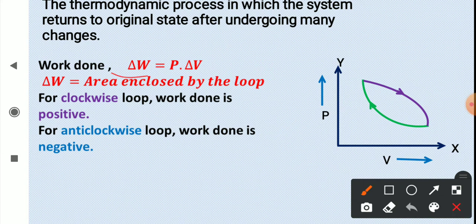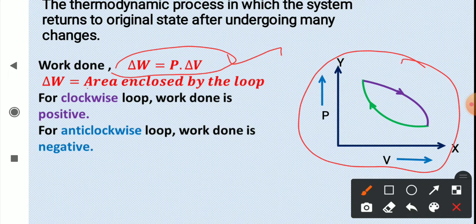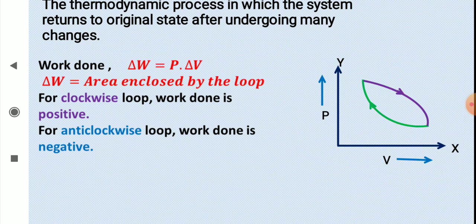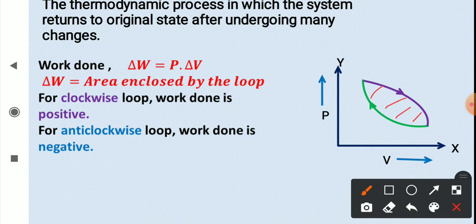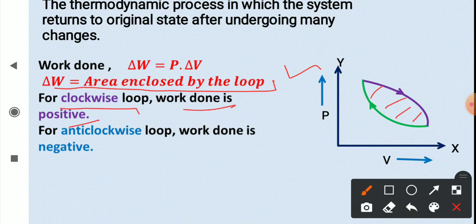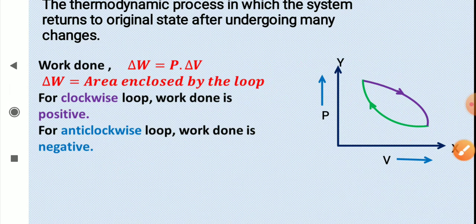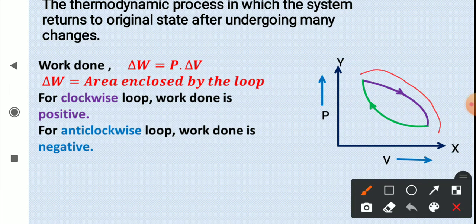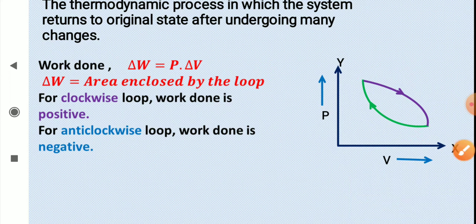The work done in a cyclic process is W = P·ΔV, and from a PV diagram the work done is the area under the PV graph. For a cyclic process, the work done is the area enclosed by the loop. For a clockwise loop the work done is positive, and for an anti-clockwise loop the work done is negative.